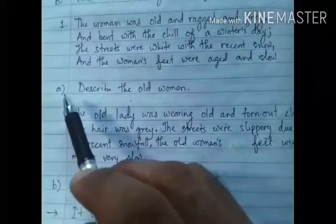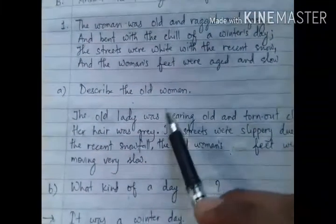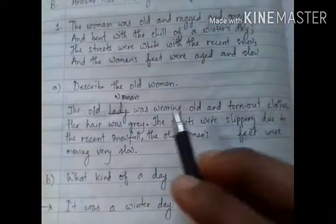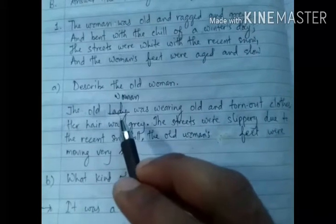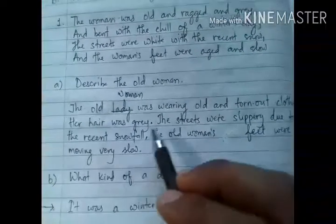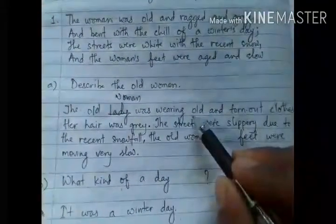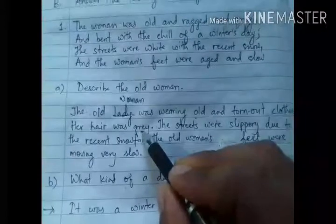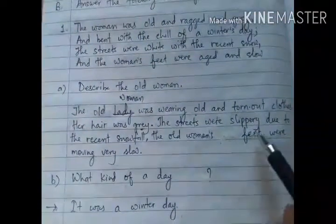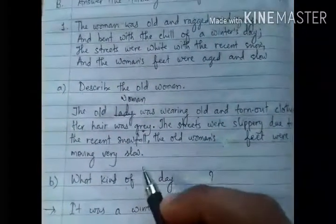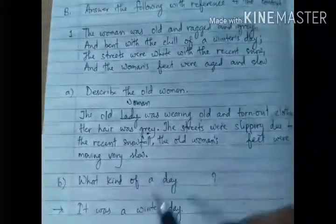Question 1A: Describe the woman. The answer is: the old woman was wearing old and torn-out clothes. Her hair was gray, which tells us she was very old. The streets were slippery due to the recent snowfall, and the old woman's feet were moving slow. That is the answer to question number one.